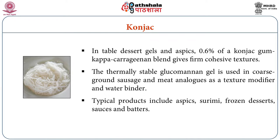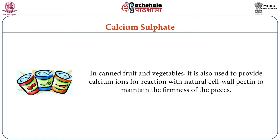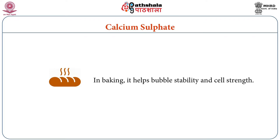Typical products include aspics, surimi, frozen desserts, sauces, and batters. Calcium sulfate is used in the preparation of water for brewing to provide both calcium and sulfate ions which are present in naturally hard water. In canned fruits and vegetables, it is used to provide calcium ions for reaction with natural cell wall pectin to maintain the firmness of the pieces. In baking, it helps bubble stability and cell strength.